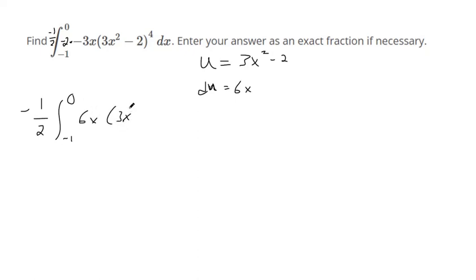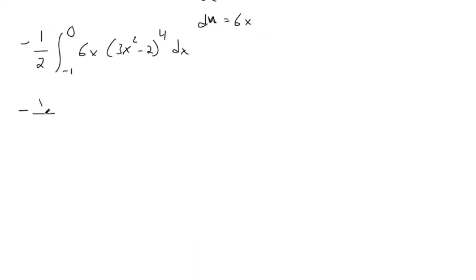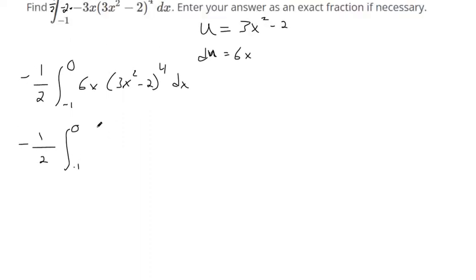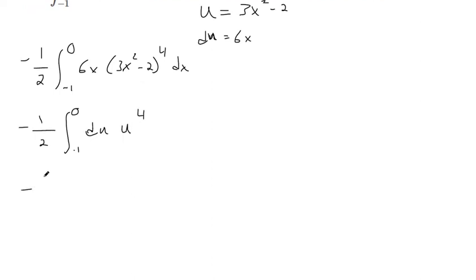3x squared minus 2 to the 4th. So we can plug in du for 6x. And we can plug in u here. So it's a much simpler integral. Usually du comes second, though, so let's just rewrite that. It usually comes at the end.